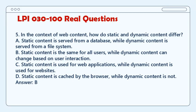Question 5. In the context of web content, how do static and dynamic content differ? A. Static content is served from a database, while dynamic content is served from a file system. B. Static content is the same for all users, while dynamic content can change based on user interaction. C. Static content is used for web applications, while dynamic content is used for websites. D. Static content is cached by the browser, while dynamic content is not. Answer: B.